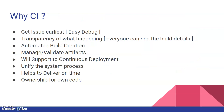Why CI? CI helps you get issues earlier - the developer gets a response and feedback very fast and can easily debug because they have a fresh mind and know what they did. Transparency: anybody can view what's happening in the common repository, who is doing what, who made the build fail or who made the build commit. Automated build creation: once you integrate your code, builds will be created automatically with no need for human interaction.